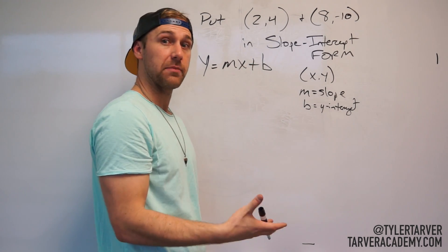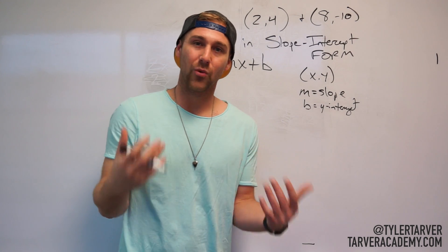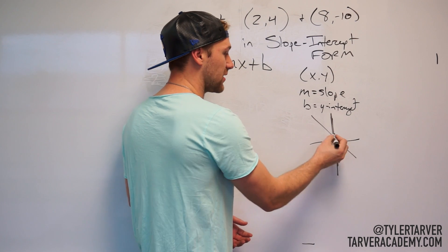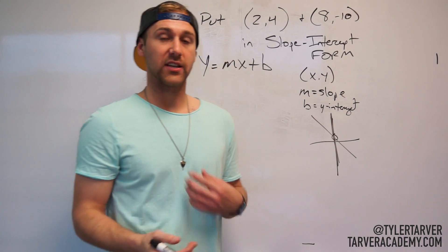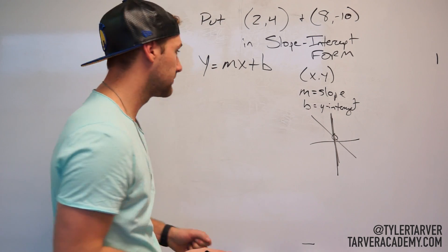Slope is just like how steep the line is. It's your rate of change. It's how steep that line is that we're working with. The equation of this line is how steep it is. And then your y-intercept, that's where it crosses the y-axis. Like again, when I showed this earlier, this is your y-axis. So wherever that line crosses, that's your y-intercept, okay? It's just telling you the number that that is on the y-axis.